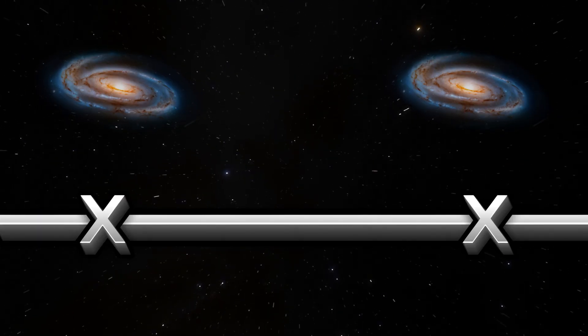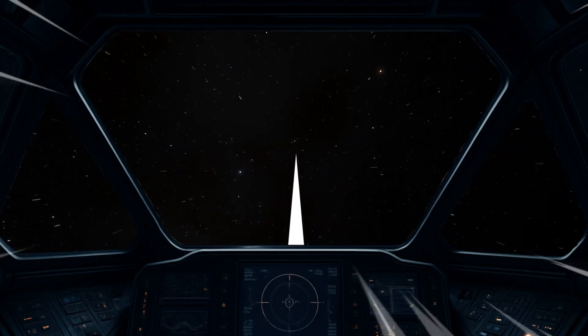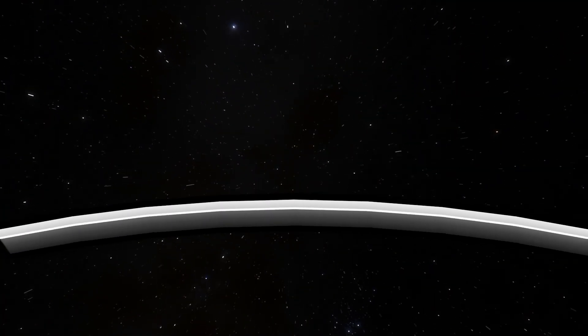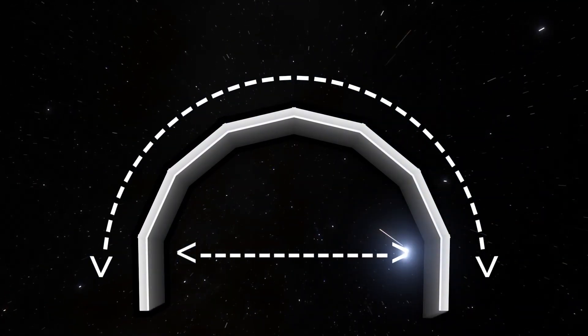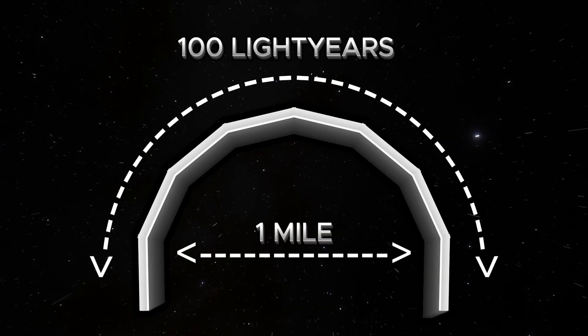If you travel across the paper in a straight line, you have to cross all the space between those points. But if you bend or fold the paper so that the two points touch, you can move directly from one point to the other without crossing the distance in between.